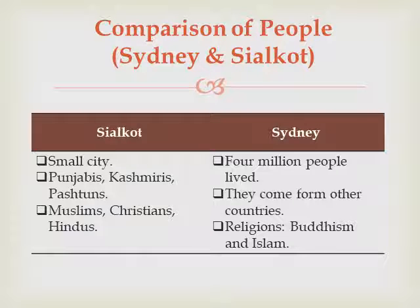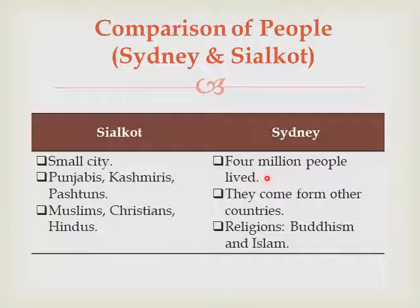Sydney's population includes immigrants from the UK, China, New Zealand, Vietnam, India, Philippines, Turkey, Pakistan, and many other countries. Mostly people in Sydney are Christians, but religions like Islam and Buddhism are also represented there.